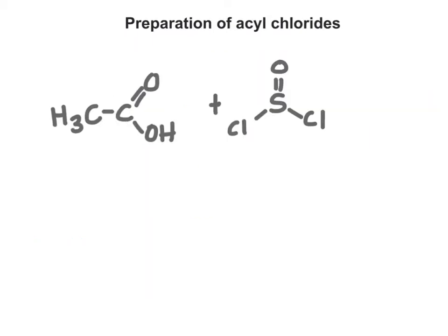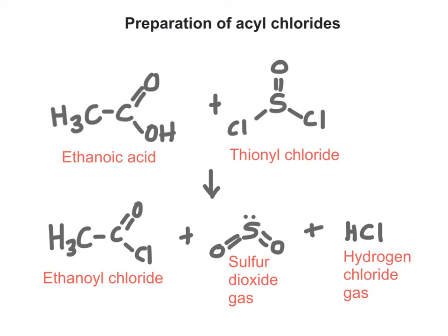To prepare an acyl chloride, you use a special reagent called thionyl chloride and react it with a carboxylic acid. That gives you ethanoyl chloride, sulphur dioxide gas, and hydrogen chloride gas — quite a toxic cocktail of products. It's not really something done in a school lab, but it is done reliably at university and professional level to produce acyl chlorides.